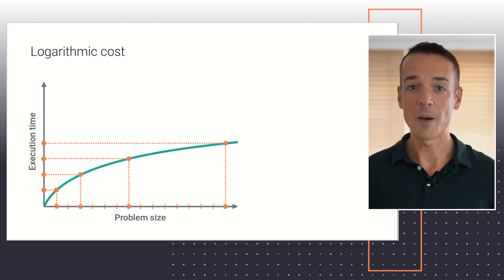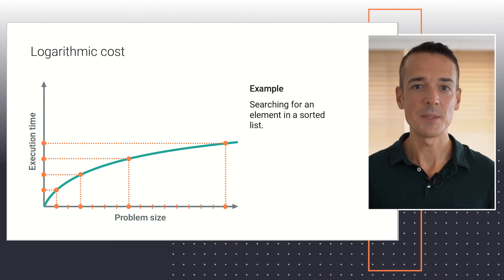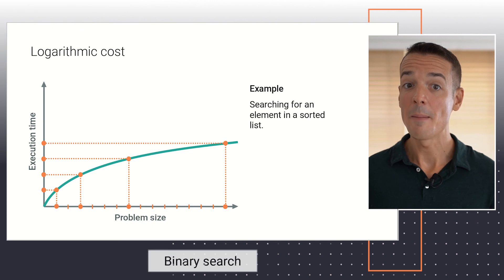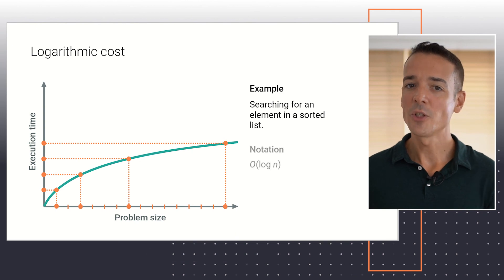An example of a popular algorithm with logarithmic cost is one that searches for a particular element in a sorted list. In case you're curious, such algorithm is called binary search, but I won't present any details about it at this time. The formal notation used to represent logarithmic cost is big O of log n.